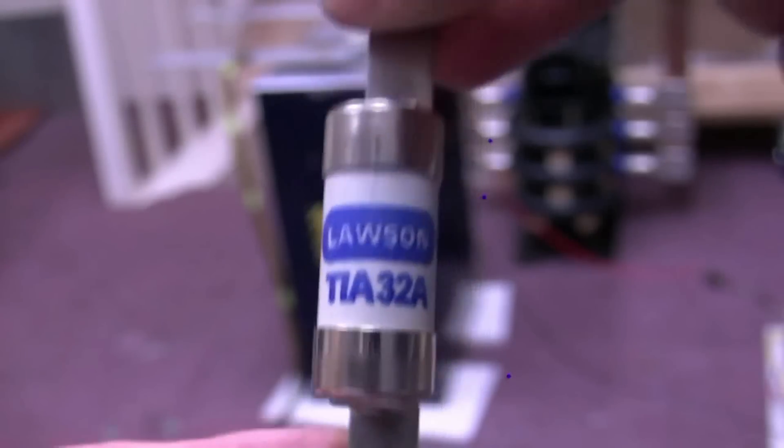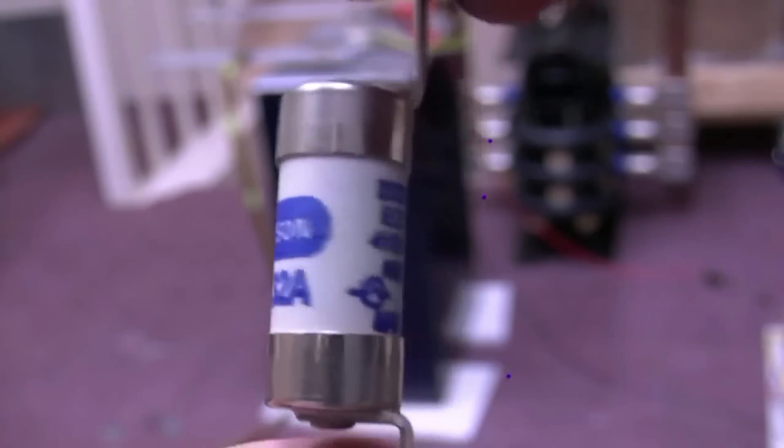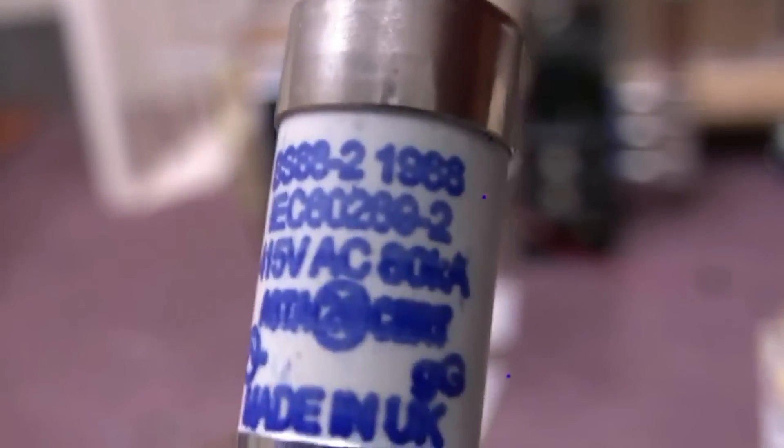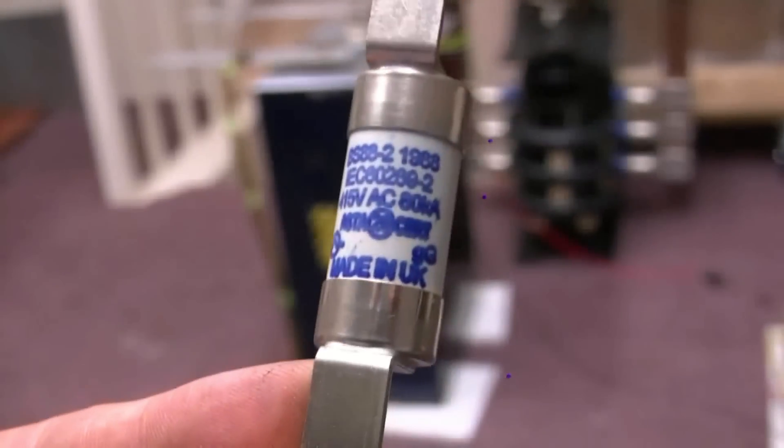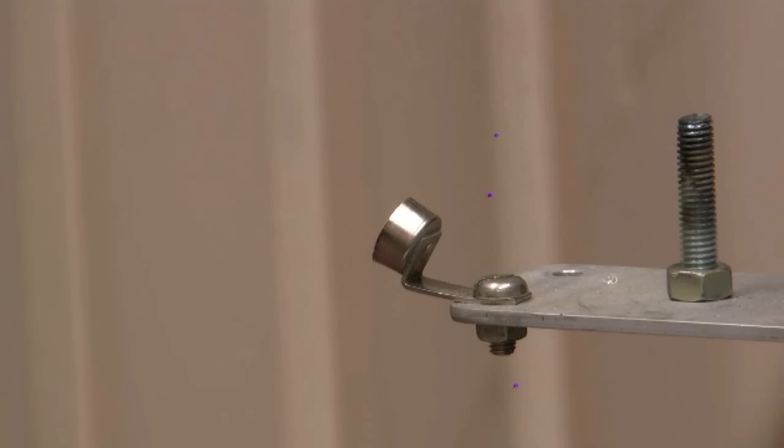This is a different type of fuse, just got some lugs on it. It's rated at 32 amps for normal use. And the rupture current, again, is 80,000 amps. So hopefully we'll see if we can pop this one as well. Safety gear's on, I'm behind my little blast screen, peering through a little hole. I might misjudge where it is. And off we go. Wow. That's impressive. Nothing left of it.